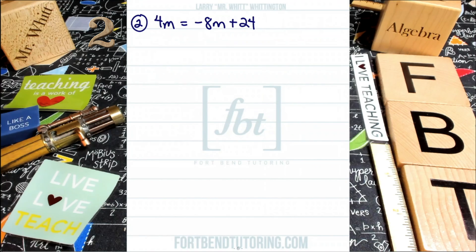Because we already have a positive 4m on the left side, in order to solve this equation in two steps, I can just eliminate the m's as in Mary on the right side by adding 8m to both sides. In other words, using the addition property of equality. I'm going to add 8m to the left side of the equation, and I'm going to add 8m to the right side of the equation.